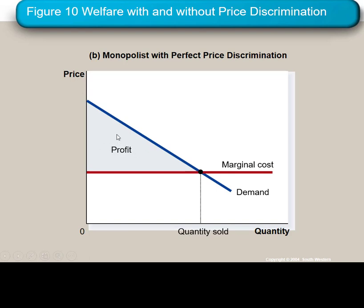With perfect price discrimination, all of that area becomes monopolist's profit and there is no deadweight loss. Since profit is part of total surplus, this is just as efficient as the competitive outcome. All of the area that in competition would be consumer surplus is now transferred to the monopolist. For each consumer, the monopolist charges their full willingness to pay and subtracts off the marginal cost from the red line — all of this becomes producer surplus or profit. With imperfect price discrimination, there would still be some deadweight loss, but smaller than under a single price monopolist.